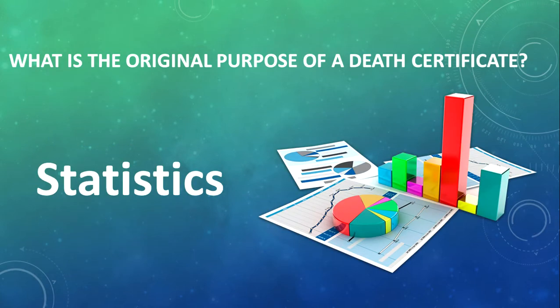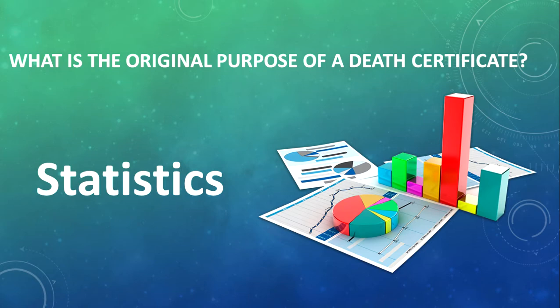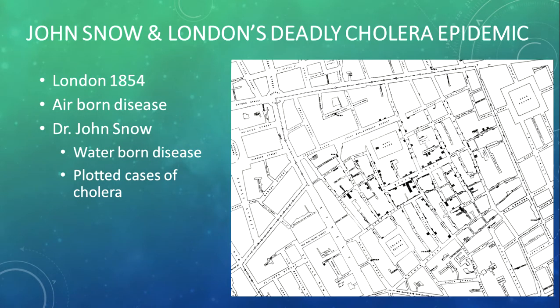What's the original purpose of the death certificate? We use them for statistics — they allowed us to count how many people died during a year and also to see if there were specific diseases causing those deaths, whether it was a lot of heart disease or some type of plague. In the case of the deadly cholera epidemic in London, they were able to use death certificates to figure out how a disease was spreading.